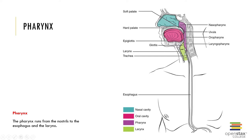Then we move down into the esophagus. The esophagus is a hollow muscular tube, and its function is to carry the bolus from the pharynx to the stomach. The esophagus has multiple parts: the upper third is composed of skeletal muscle for swallowing, the middle third is a mixture of skeletal and smooth muscle, and the lower third is made entirely of smooth muscle.